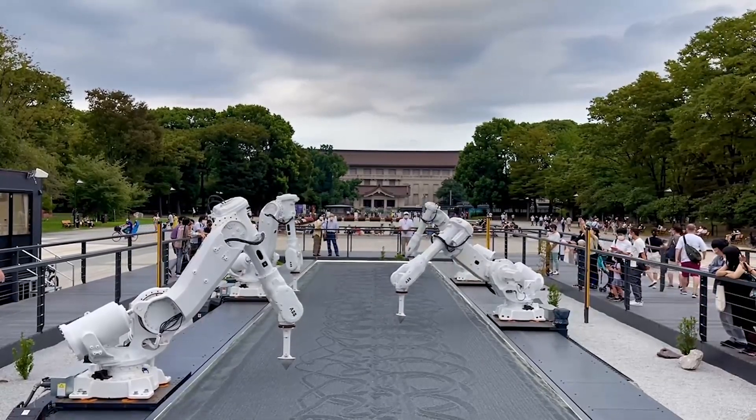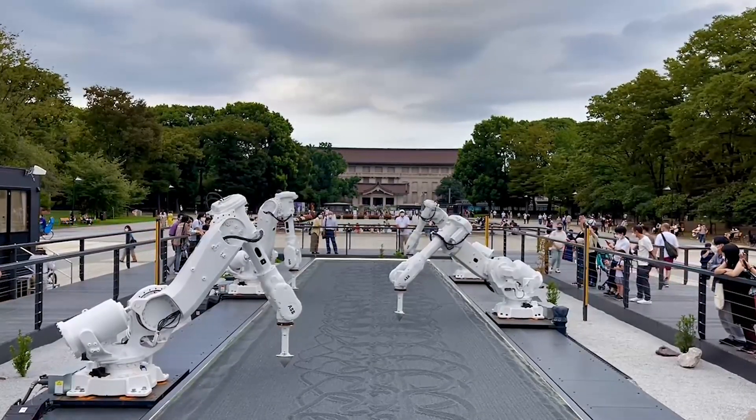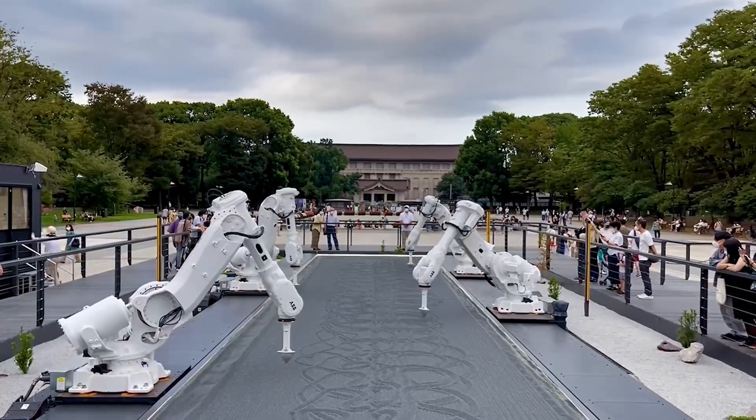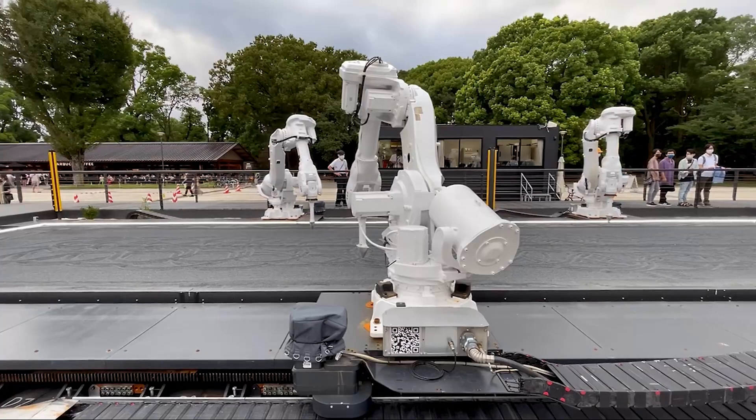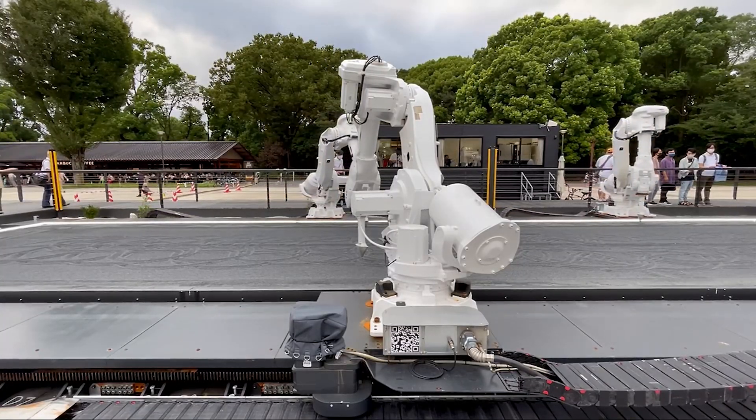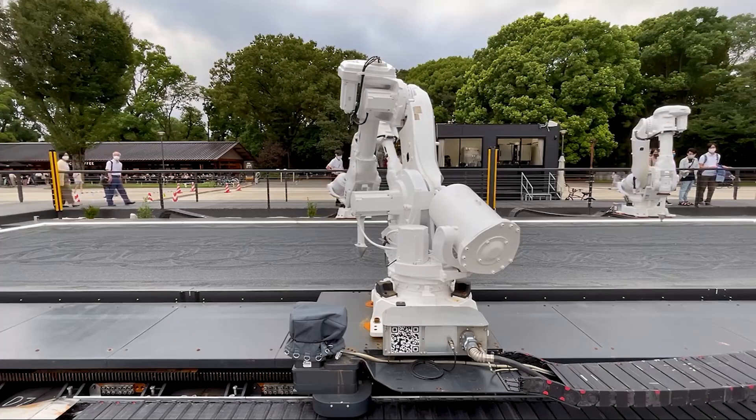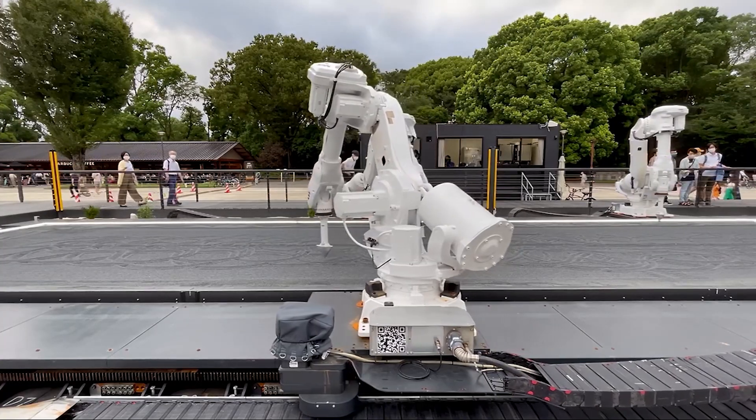GPT-5 could distinguish between a formal business setting and a casual conversation, adjusting its tone and style accordingly. It could also recognize when a user is seeking advice or expressing frustration, allowing it to provide empathetic and supportive responses that consider the user's emotions and needs.